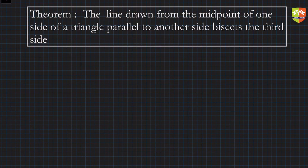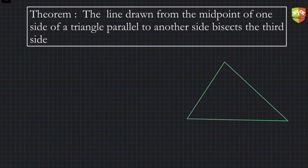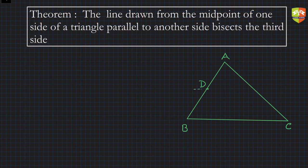Let's first draw a figure. Here is triangle ABC. Point D is the midpoint of AB, and I'm going to draw a line from D parallel to BC. Let's say it cuts AC at point E.